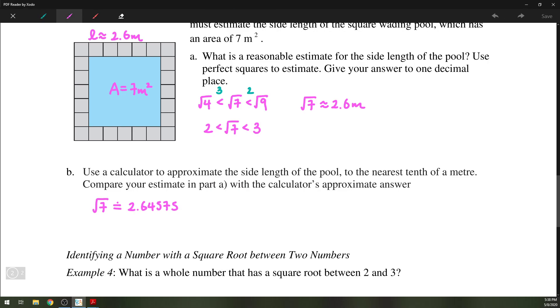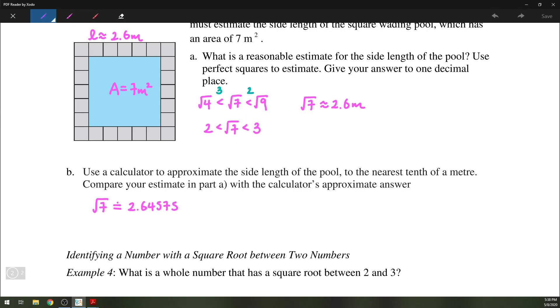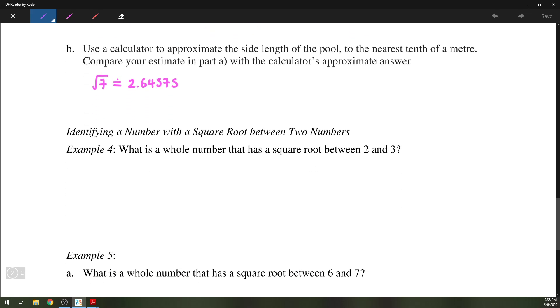We can also ask the same question, but almost backwards. So it says here, what is the whole number that has a square root between 2 and 3? We're going to introduce a variable x, which is going to be some whole number. We have 2 less than the square root of x, which is less than 3. We can rewrite this as square root of 4 less than the square root of x, which is less than the square root of 9.